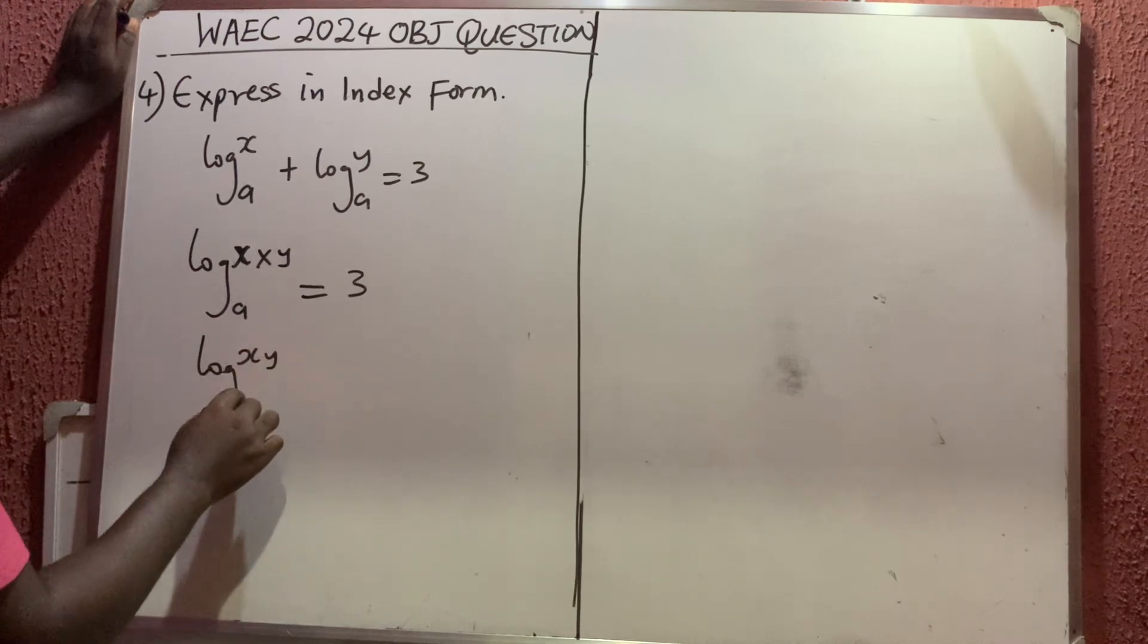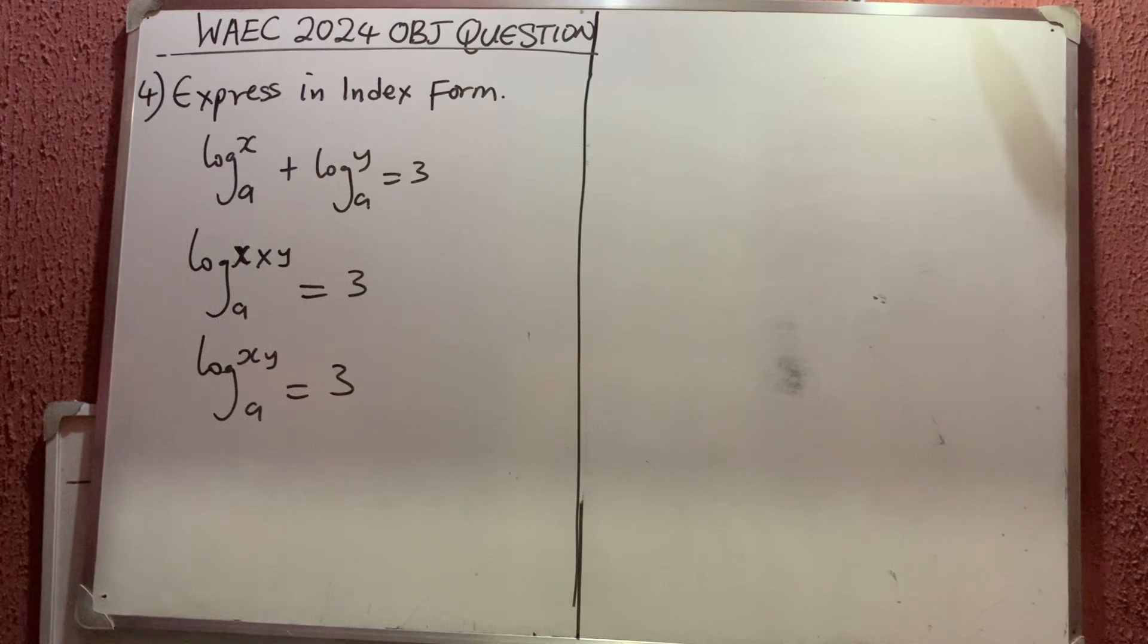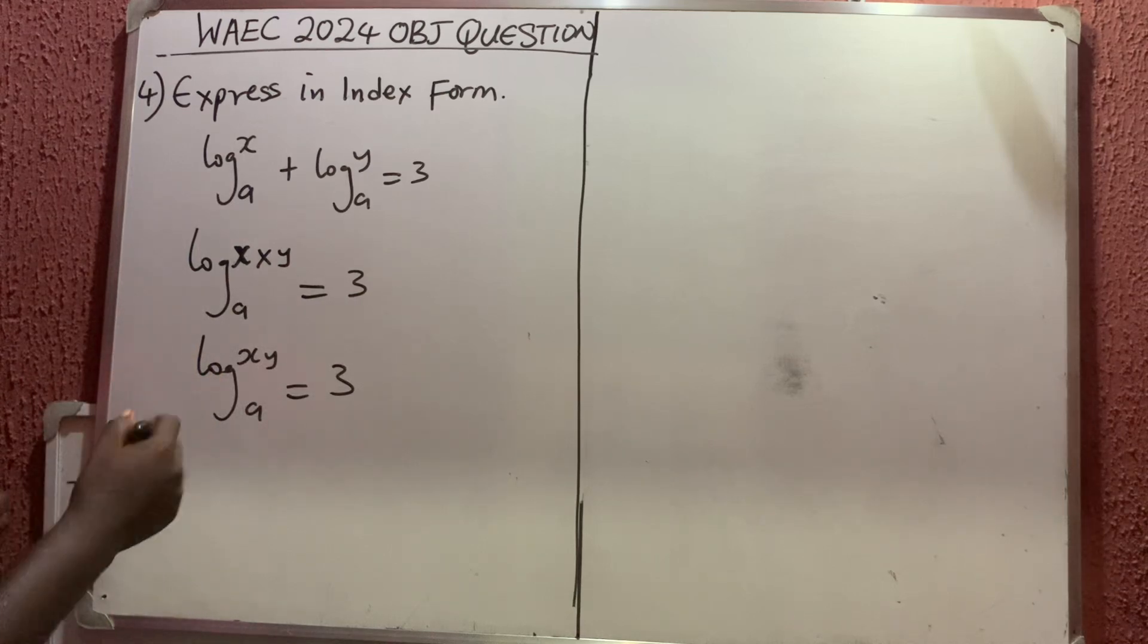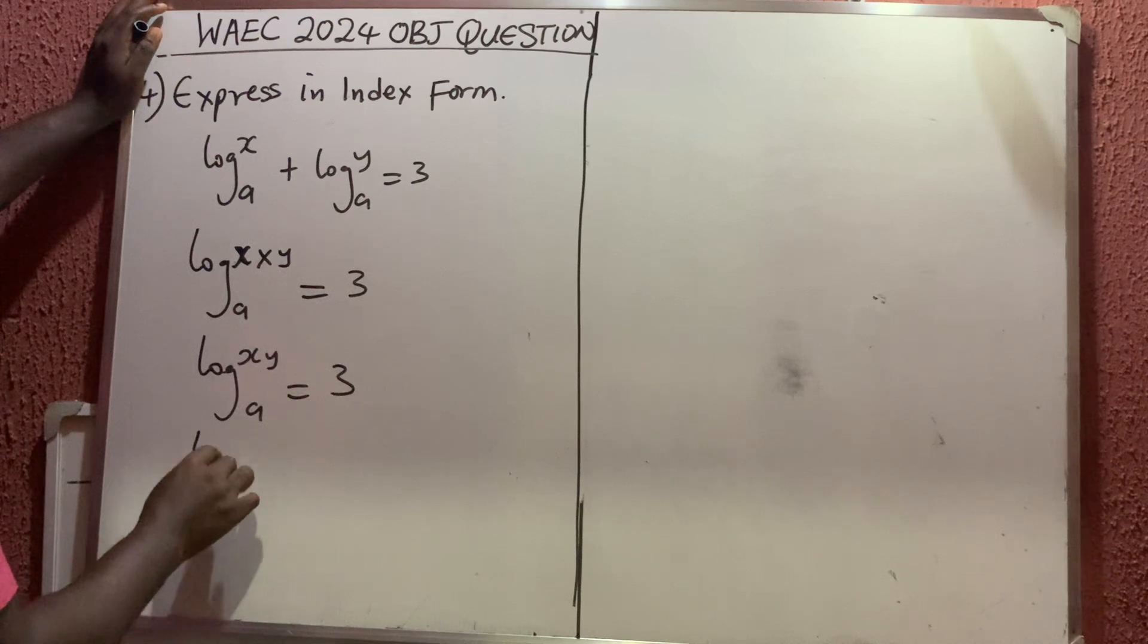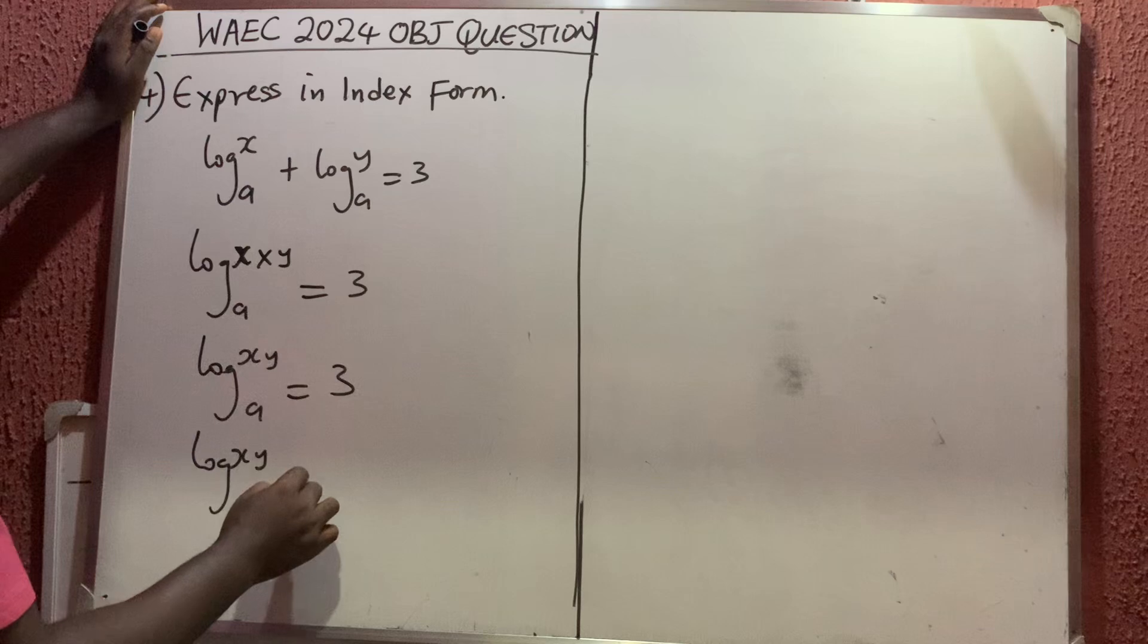You should know that 3 is the same as saying 3 times 1. So this is log xy base a equals 3 times 1. Now this is the same as log xy base a equals 3.